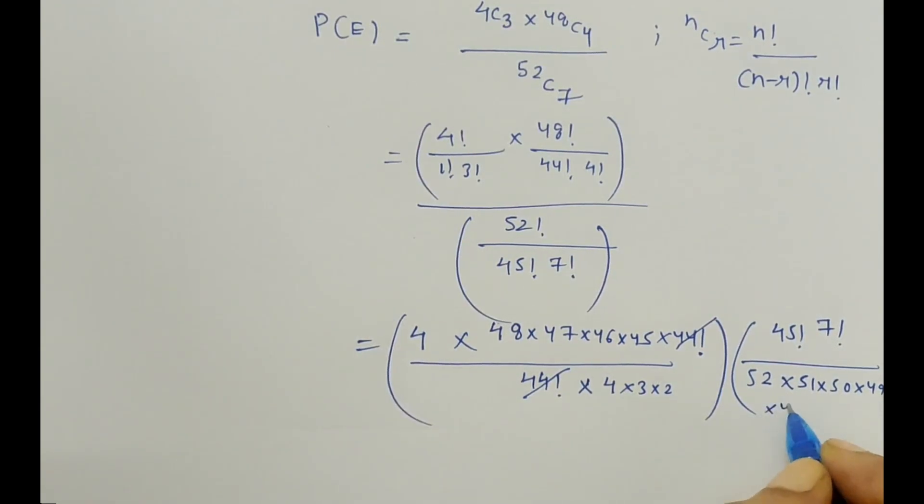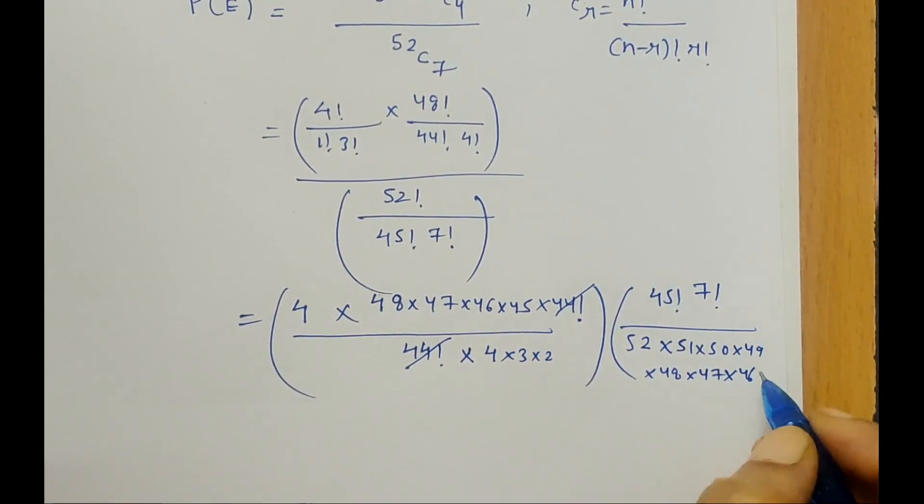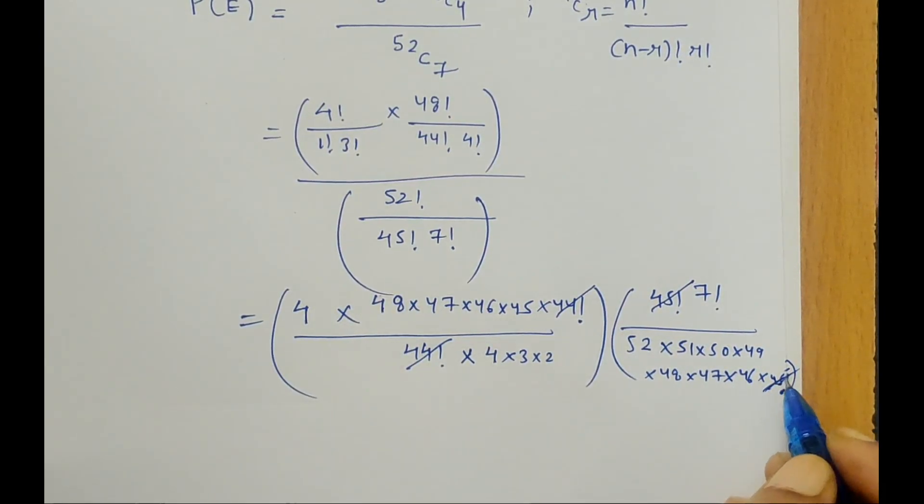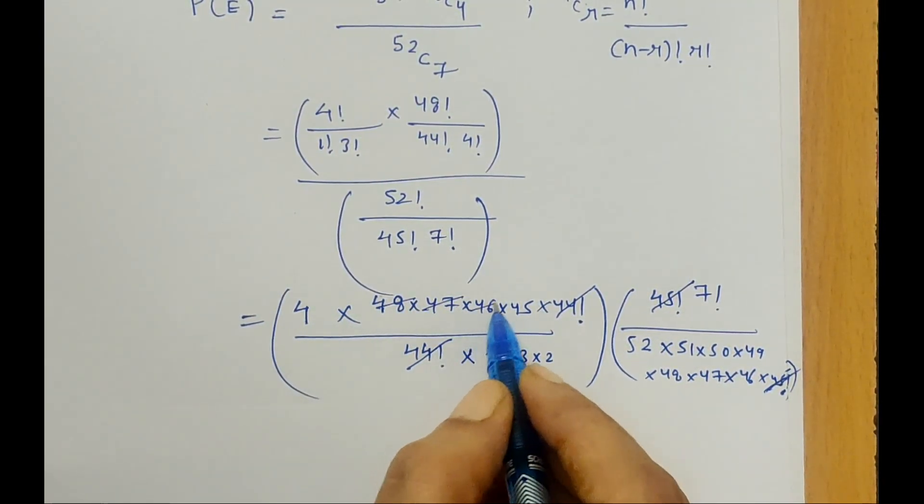52 times 51 times 50 times 49 times 48 times 47 times 46 times 45 factorial. This 45 factorial and this gets cancelled. That's why we are not expanding it further.